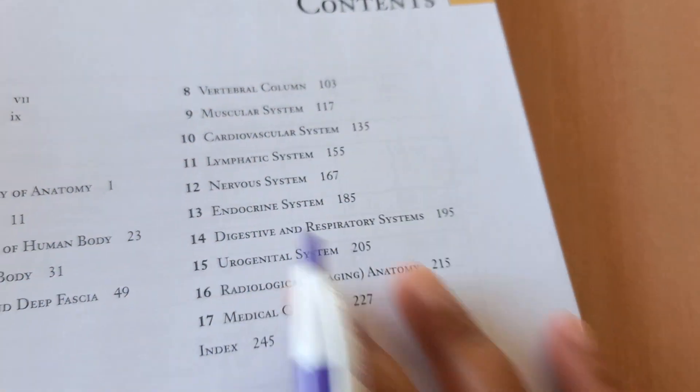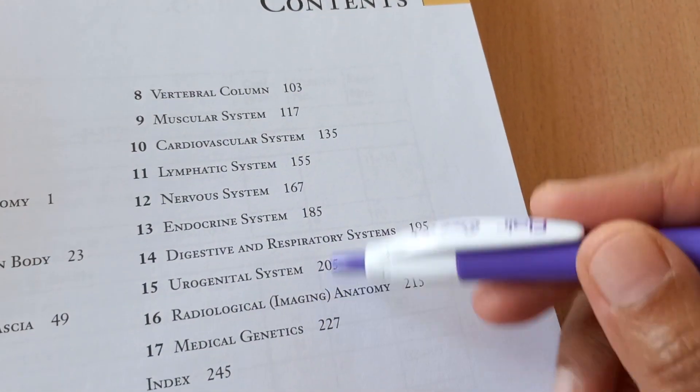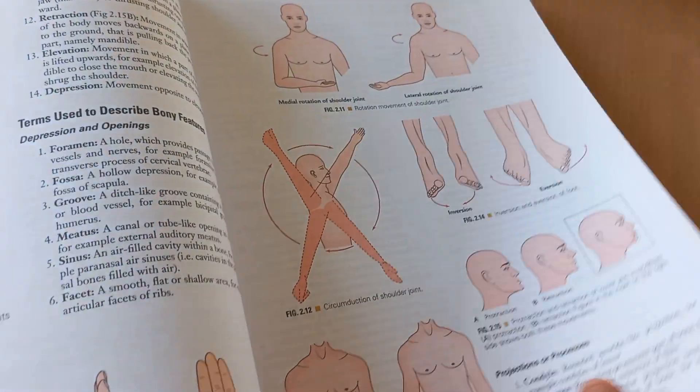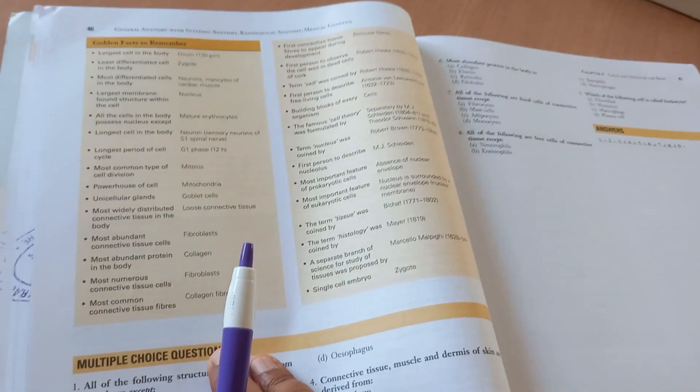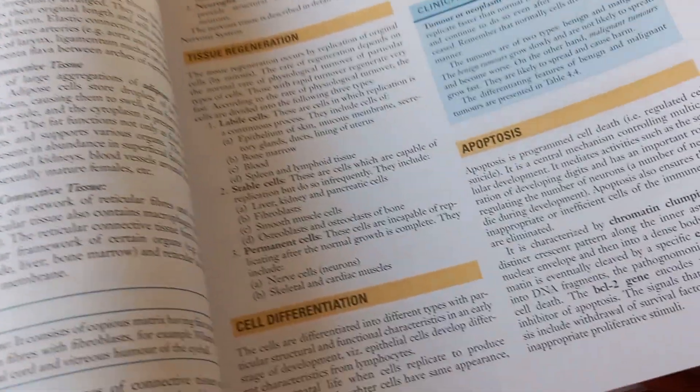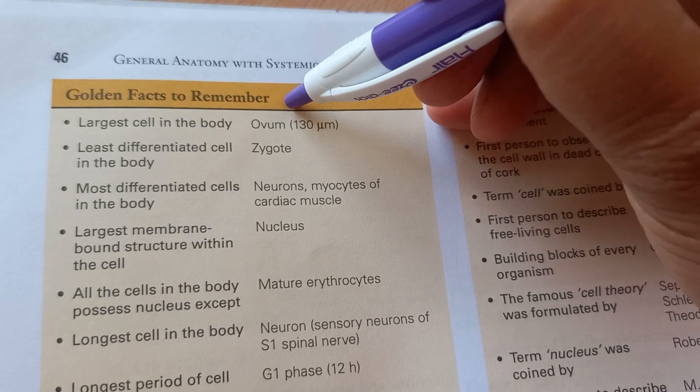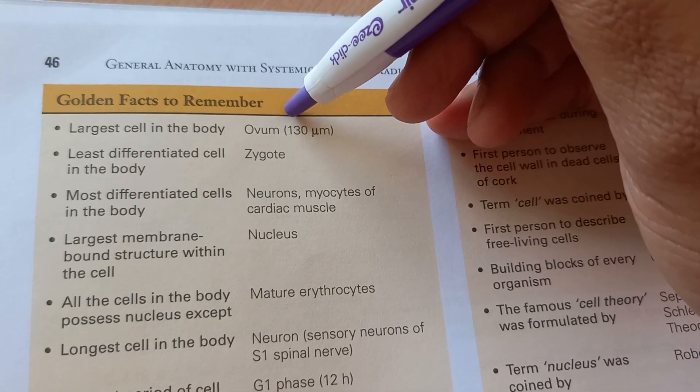Basically the overall structure and that's the anatomy they are covering. Radiology, then genetics. At the end of every chapter, there seemed to be something. Let's look at this. What is this? Golden facts to remember. Largest cell in the body is going to be the ovum if you are a female. If it is a male, then what will it be? MCQs.